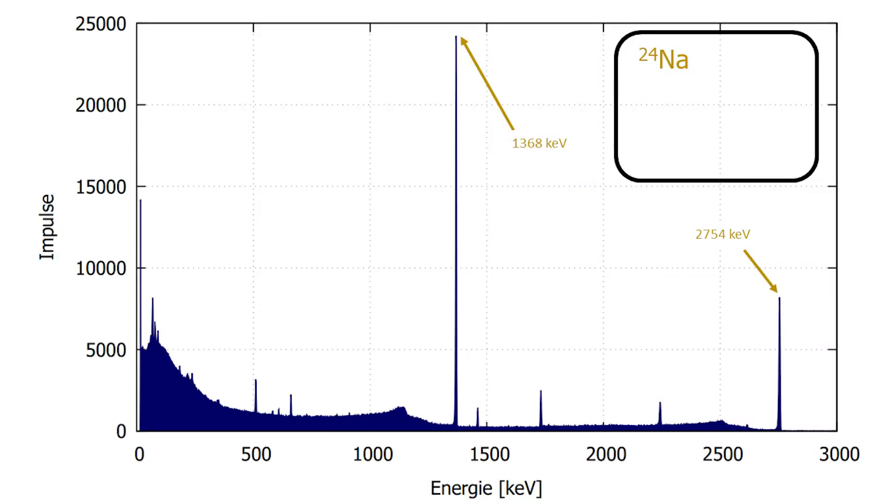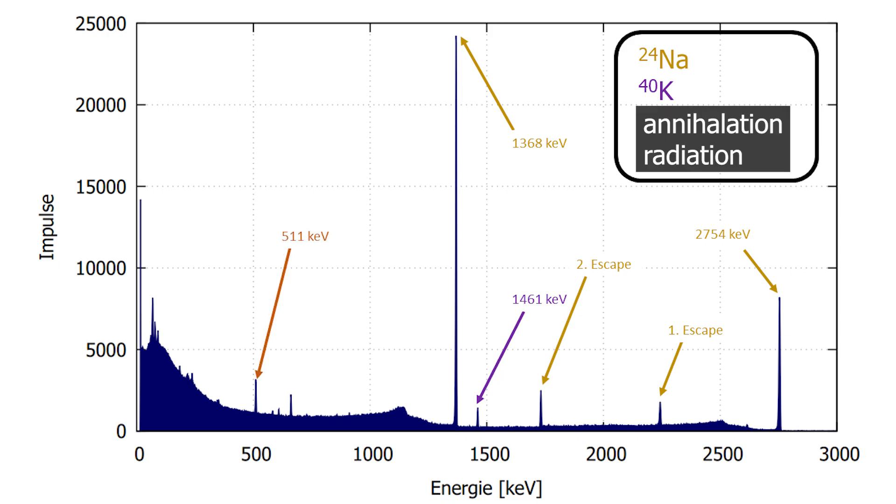We can also examine the escape lines of the 2,167 keV line. Also, potassium-40 is present almost everywhere and annihilation radiation at 511 keV.